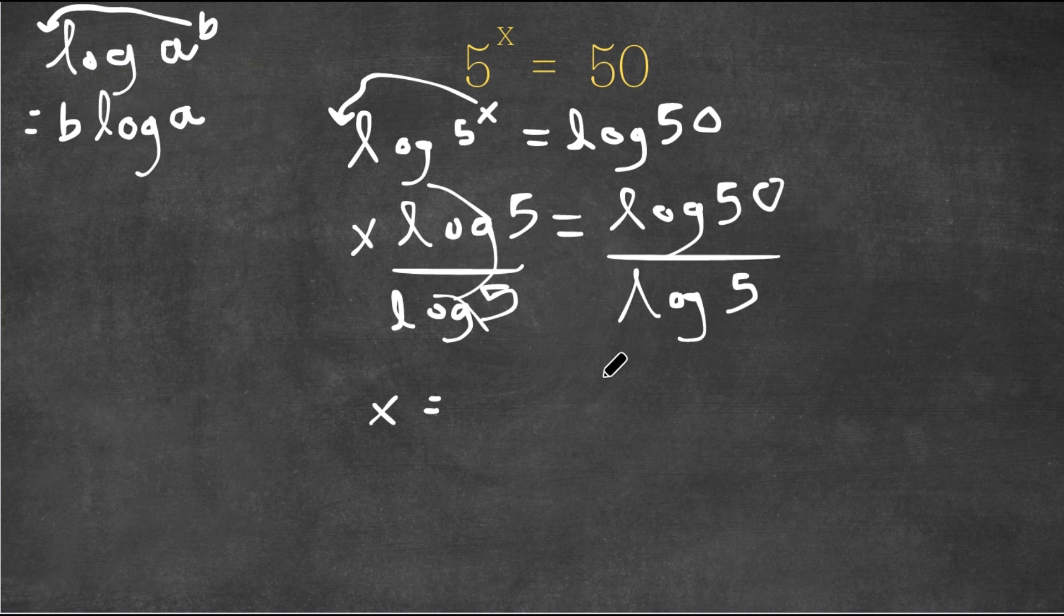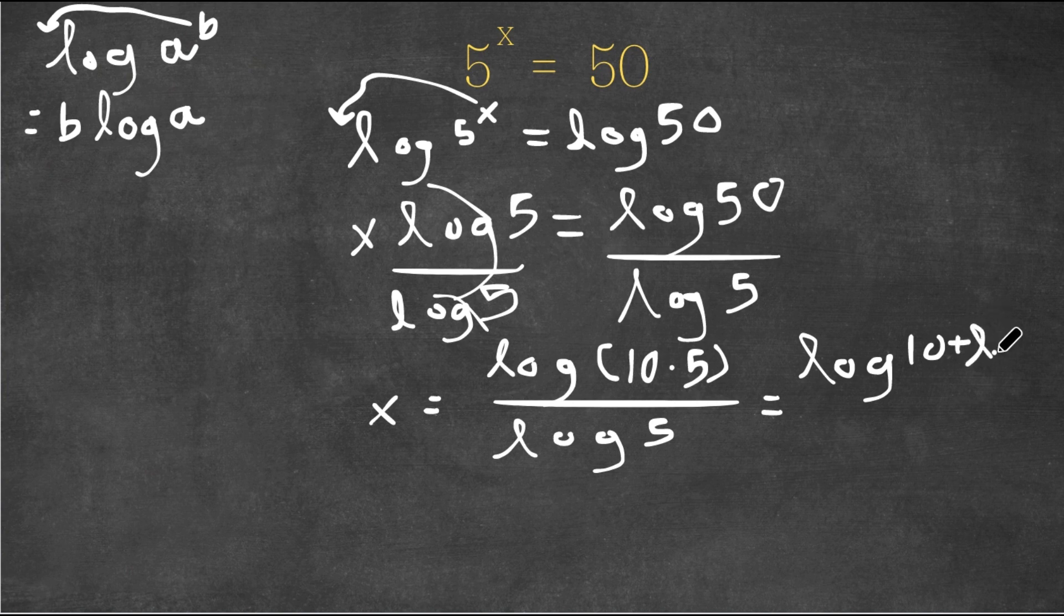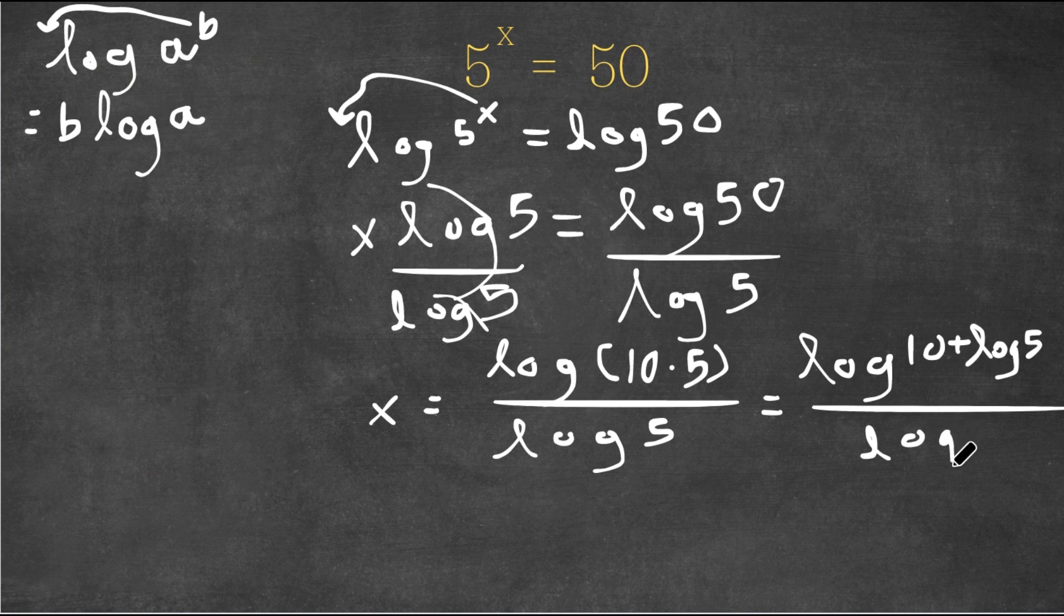Well, log 50 is the same thing as log 10 times 5, all of this over log 5. And now this is the same thing as log 10 plus log 5 over log 5. Now log 10 is actually equal to 1, so this is equal to 1 plus log 5, which is approximately 0.699.